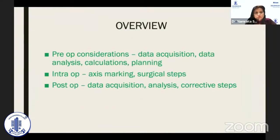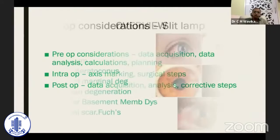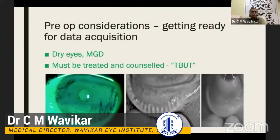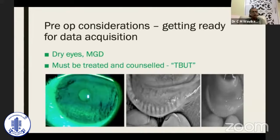Our journey is going to start with the pre-operative considerations, then intra-op, and in the end post-op considerations. The journey begins with a careful slit-lamp examination where there are many conditions which can be diagnosed that are responsible for regular or irregular astigmatism. Also important is dry eye and MGD because we require a pristine ocular surface to have a very good astigmatic result.